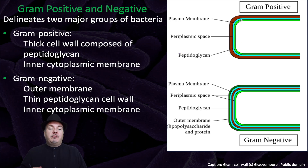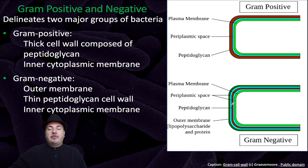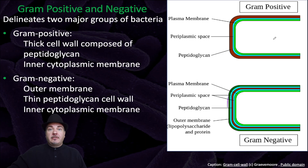The other type of bacteria would be called gram-negative. Gram-negative have an inner membrane, just like the gram-positive do, shown here in this light green. They have a peptidoglycan layer, but it's a much thinner peptidoglycan layer. And then outside of that, they have an outer membrane shown in dark green, which you don't find in the gram-positive bacteria.